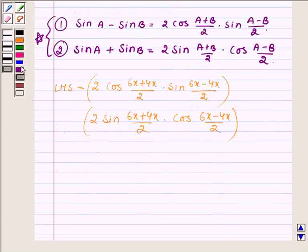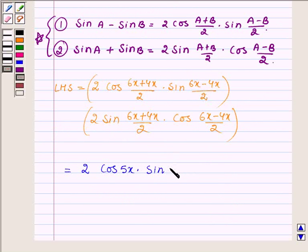This is further equal to 2cos(5x)·sin(x), where 10x/2 is 5x and 2x/2 is x. Now solve the second bracket which is 2sin(5x)·cos(x).